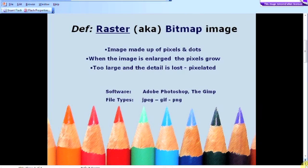Let's first of all have a look at what a raster image is. These images are also known as bitmap images. This is an image that's made up of pixels and dots, and the smaller and closer together the dots are, the clearer the image is going to be. As the image is enlarged, the pixels grow, and if you enlarge it enough then the image will become grainy and blurry. If it's enlarged too much, the detail will be lost and it will be known as pixelated. Examples of raster software include Adobe Photoshop and GIMP, and file types are JPEG, GIF and PNG.